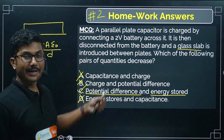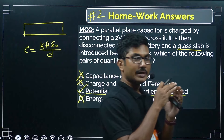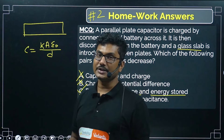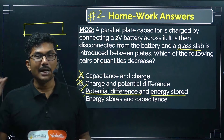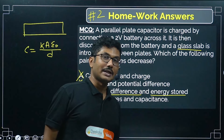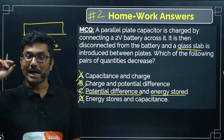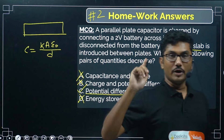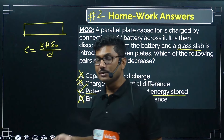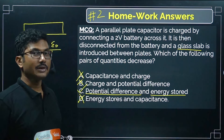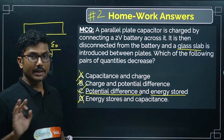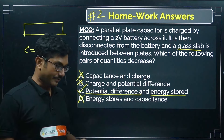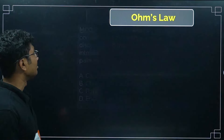In the opposite case — if the glass slab was already there when the capacitor was charged, and then the slab is removed — capacitance decreases, charge remains constant, voltage increases, and energy stored increases. Only capacitance decreases; charge will always remain constant no matter what.